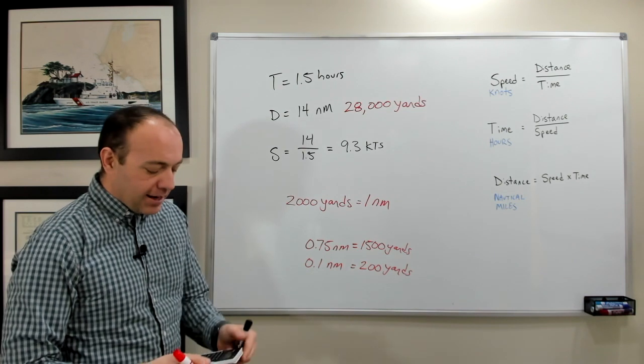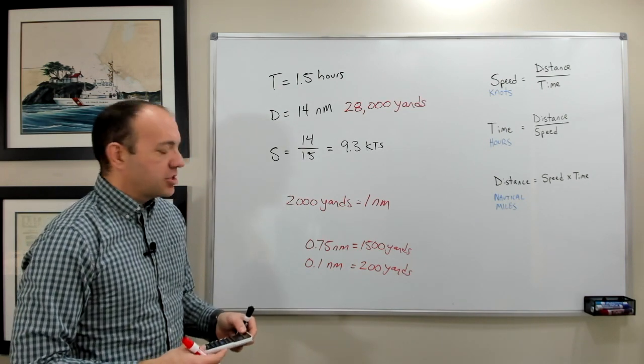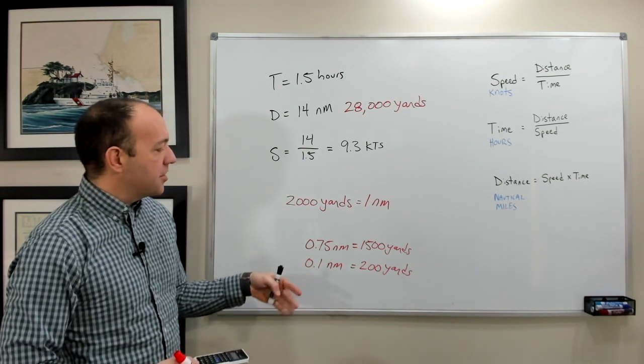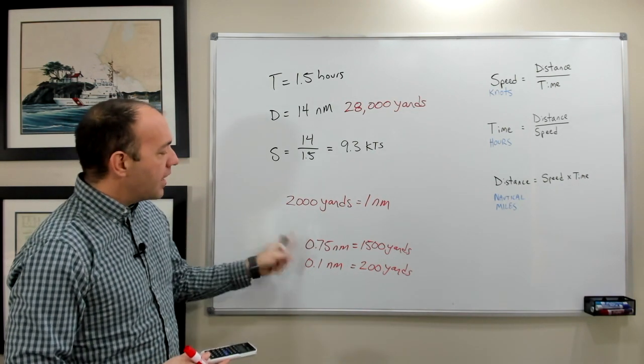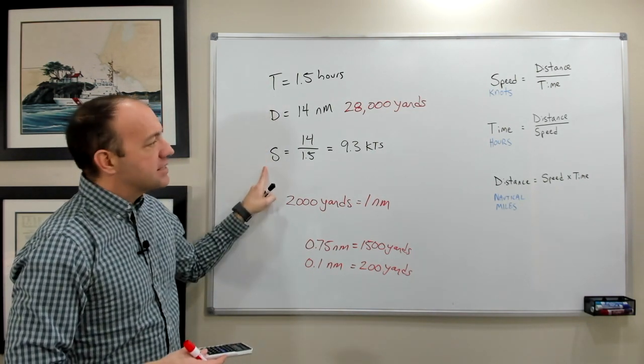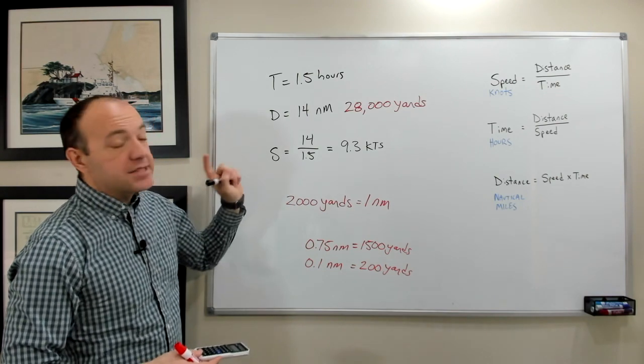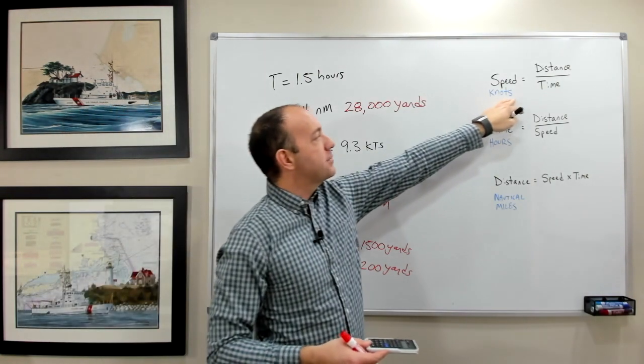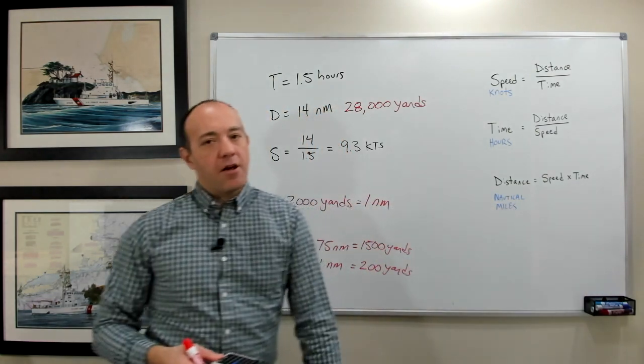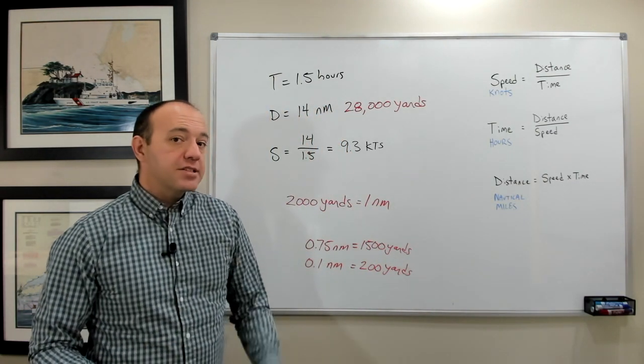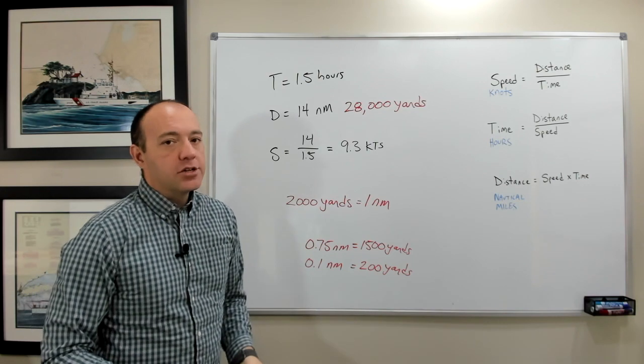Sometimes you'll hear when you're navigating out on the water a discussion about yards versus nautical miles. But it's perfectly fine to use nautical miles all the time. However, if you're going to do these speed-distance-time formulas, the units are very important. Speed has to be in knots, time has to be in hours, and distance needs to be in nautical miles. If you don't have those units, you need to convert them, and then you can use the formulas.